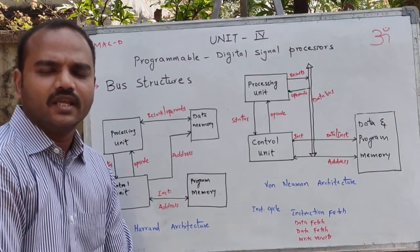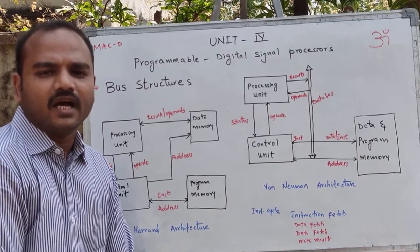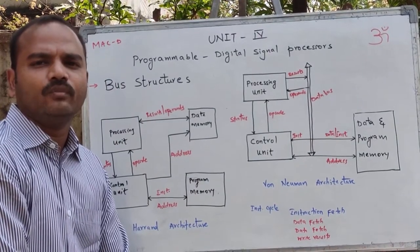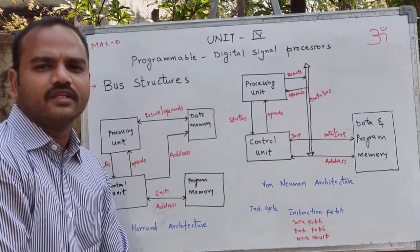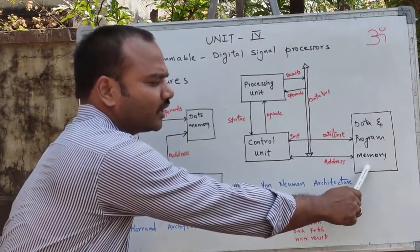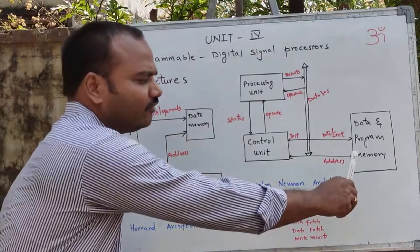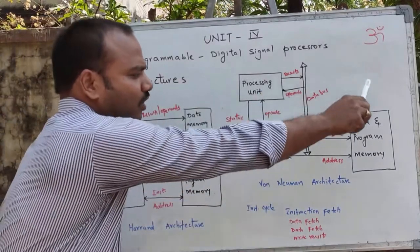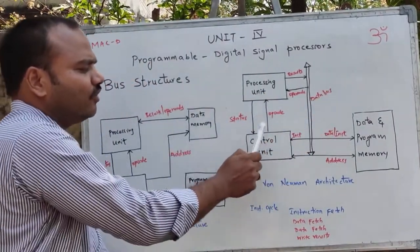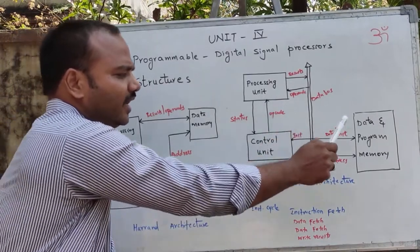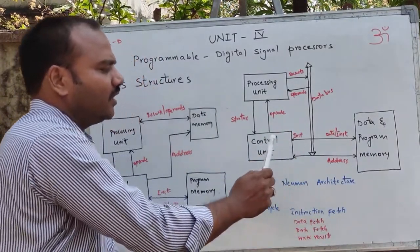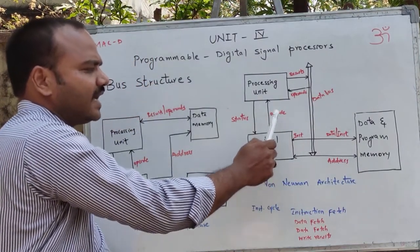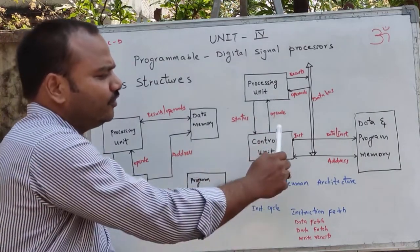This is because conventional microprocessors use Von Neumann architecture. Von Neumann architecture consists of the stored program concept — that is, in one memory you have both data and program. This architecture consists of a control unit, processing unit, and a combined data and program memory.